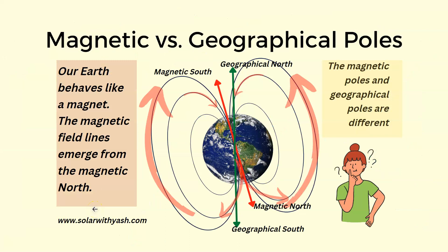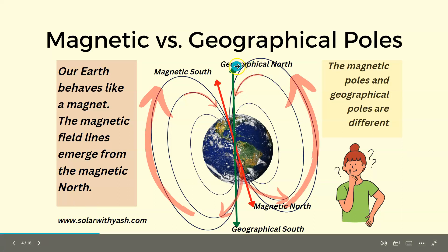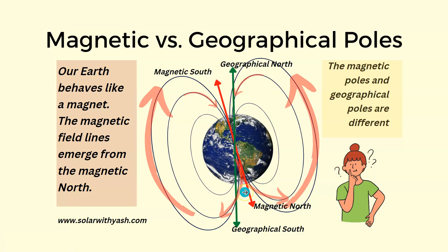Let us understand the difference between magnetic poles and geographical poles. We know that our earth behaves like a magnet, and the magnetic field lines emerge from magnetic north and go into the magnetic south of the earth. The green line shows the geographical north-south line — that is the true north-to-south line — while the red line shows the magnetic north and magnetic south. These two lines are different and do not align.